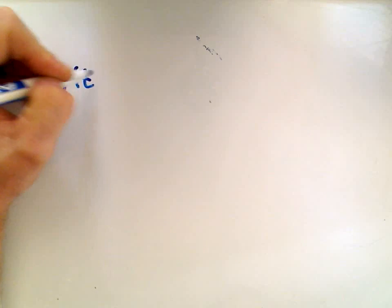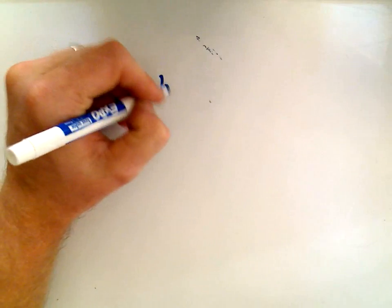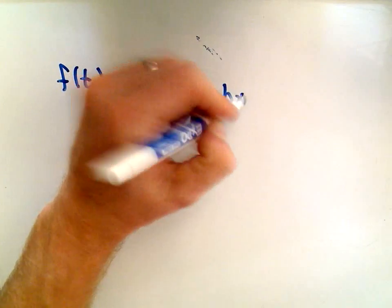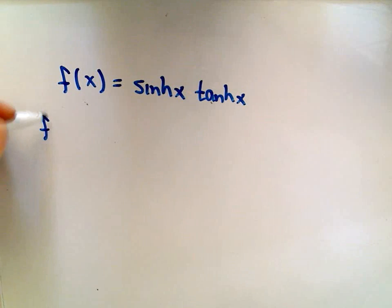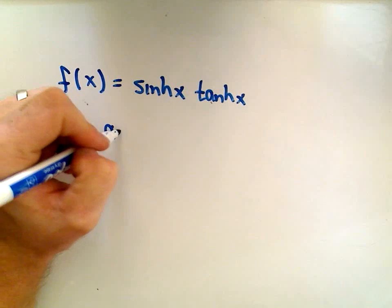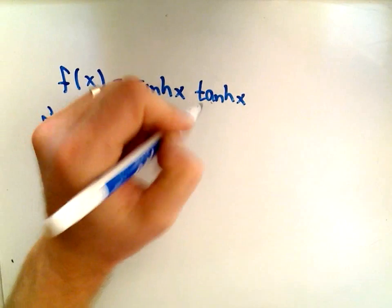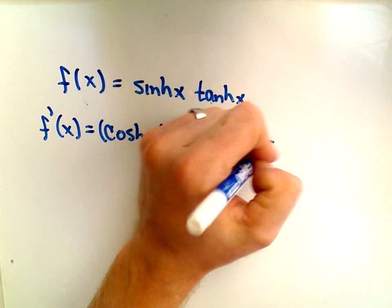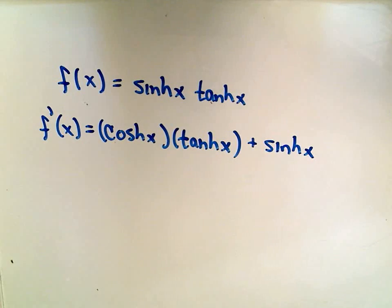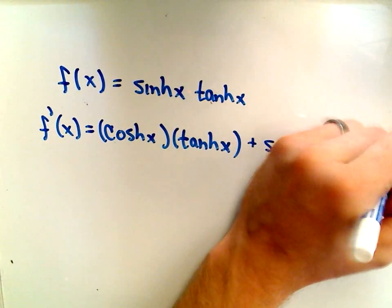Let's do one more. Suppose our function is hyperbolic sine x times hyperbolic tangent of x — so f of x. When I take the derivative of this, I'm going to have to use the product rule. The derivative of hyperbolic sine is hyperbolic cosine; leave the hyperbolic tangent alone. Plus, leave the hyperbolic sine alone, times the derivative of hyperbolic tangent, which is hyperbolic secant squared.